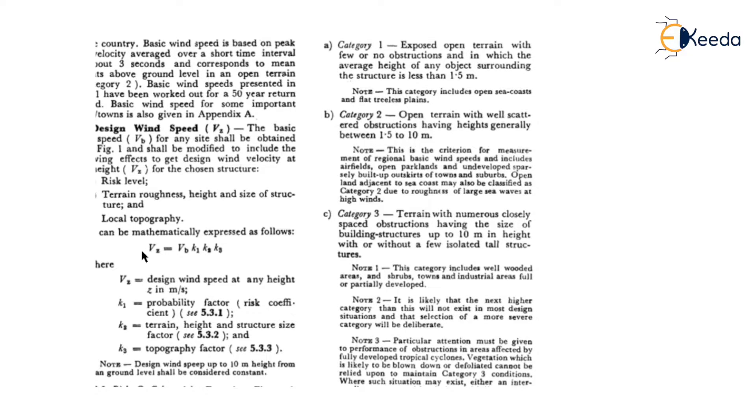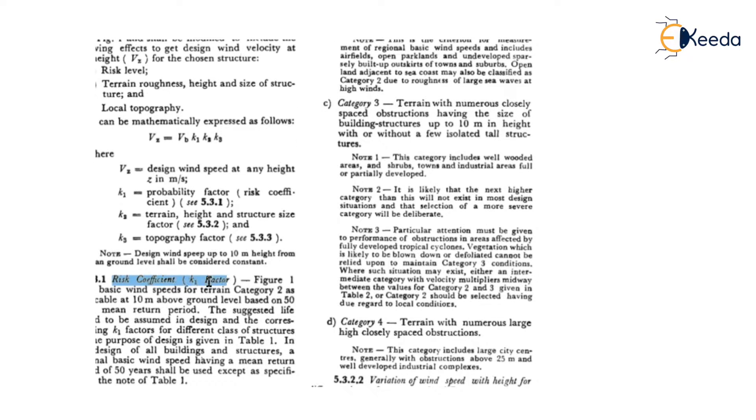We have one formula: VZ equals VB multiplied by K1, K2, and K3. Where VZ is the design wind speed, VB is the basic wind speed, K1 is the risk coefficient or risk factor, K2 is the terrain factor or terrain coefficient, and K3 is the topography factor. To calculate design wind speed, we multiply the basic wind speed by these factors.